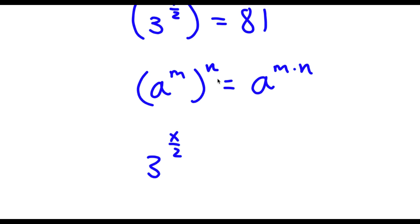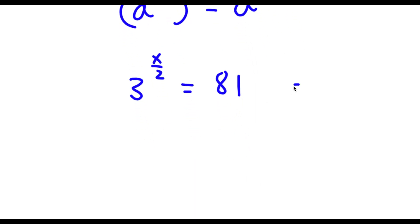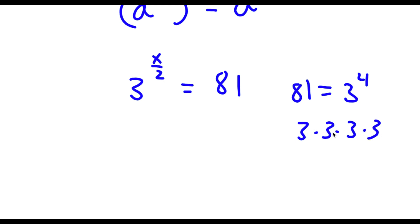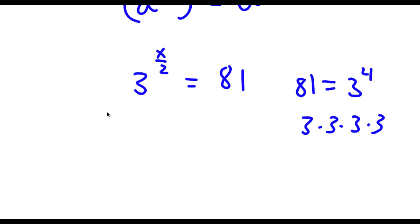Which is simply 3 to the power of x over 2. So I have 3 to the power of x over 2 is equal to 81. Now 81 is the same thing as 3 to the power of 4, because 3 to the power of 4 is 3 times 3 times 3 times 3: 3 times 3 is 9, 9 times 3 is 27, and 27 times 3 is 81. So now I'm going to replace 81 with 3 to the power of 4. So now I have 3 to the power of x over 2 is equal to 3 to the power of 4.